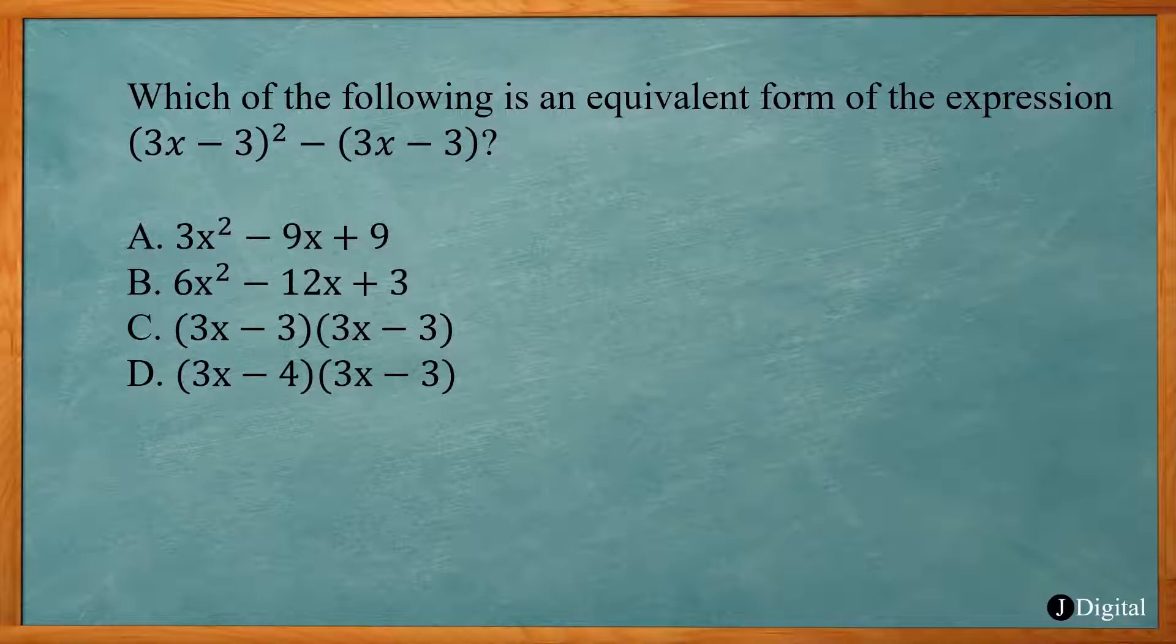Now you might be tempted just to multiply this all out and combine like terms. You would have (3x - 3)(3x - 3) - (3x - 3). Here you can do FOIL.